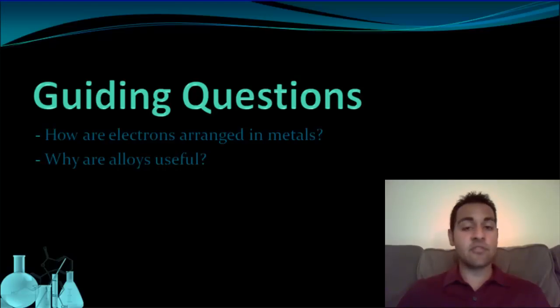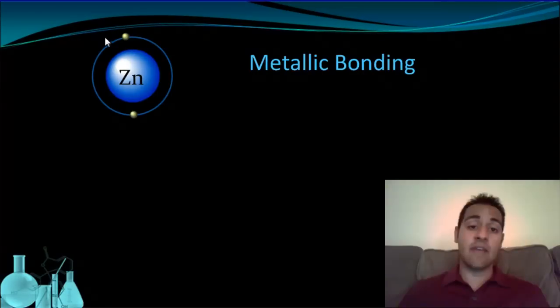To answer that, we first need to look at what electrons are actually doing in a metal. So here we have an atom of zinc. This atom of zinc is only showing the valence electrons. I haven't drawn in any of the others. So we have the two valence electrons for zinc.